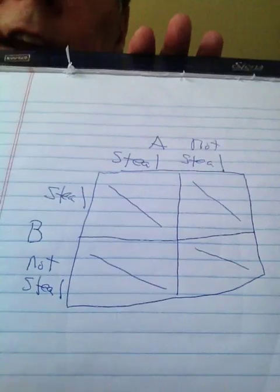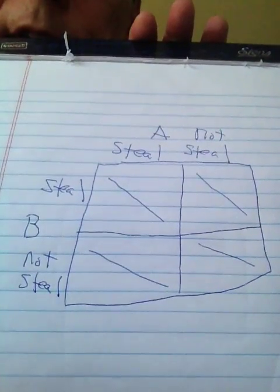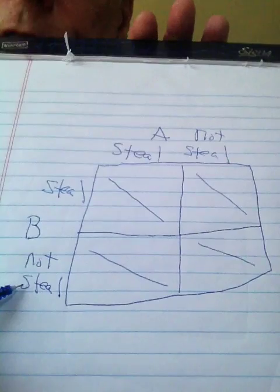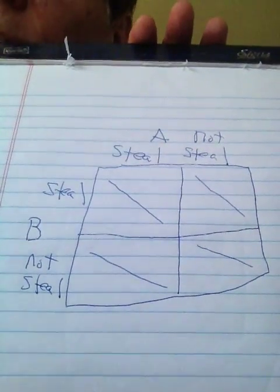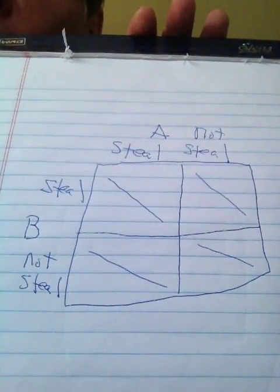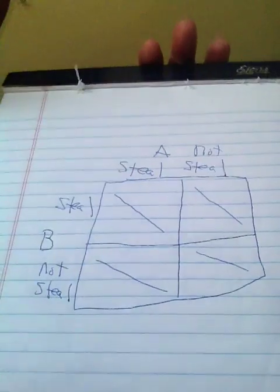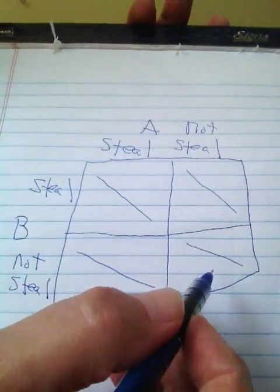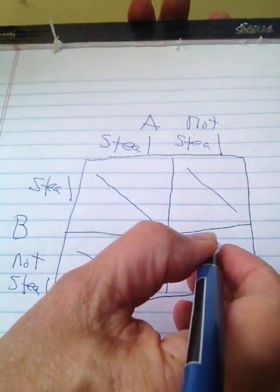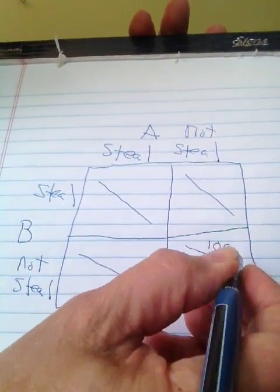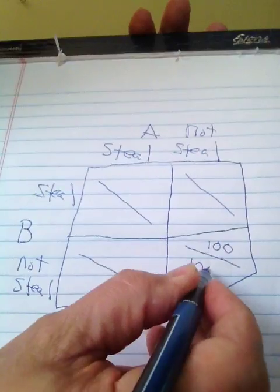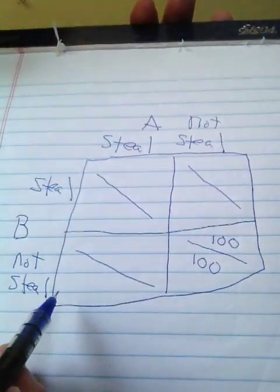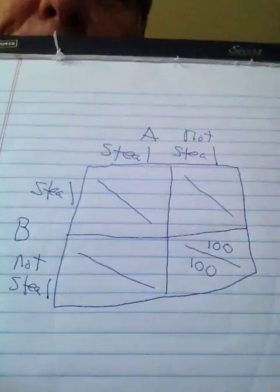Let's look and see how much each player gets if each decides not to steal. Obviously, if they don't steal from each other, they will get their full $100. So in the not-steal/not-steal cell, Mr. A will get $100, and Mr. B will get $100.